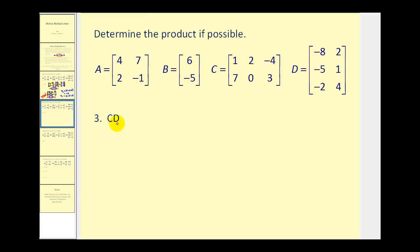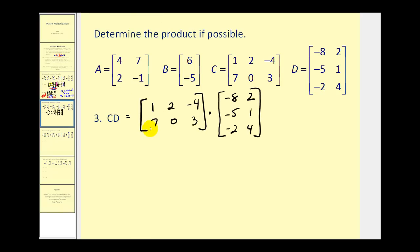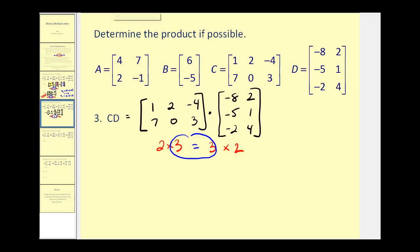Number three: we have matrix C times matrix D. Matrix C is a two by three matrix and matrix D is a three by two matrix. These two numbers are equal to each other, which means we can perform the multiplication. The product will be a two by two matrix.